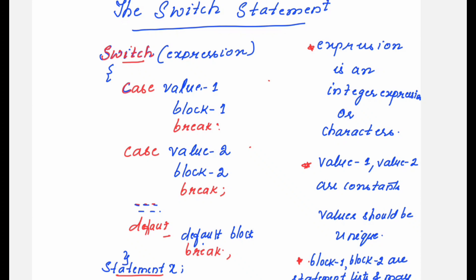Normally when we have to select one from different alternatives, we can use if statements. But suppose if the number of alternatives are more, that's when you can use the switch statement. If the number of alternatives are too many and you need to select one from that complete list, then you can go with the switch statement.